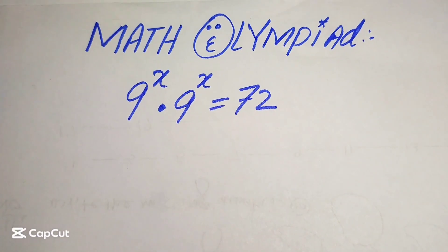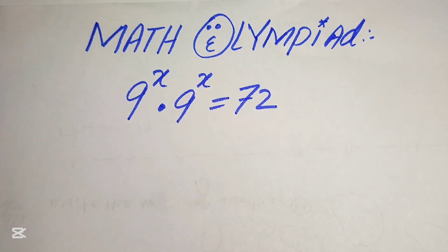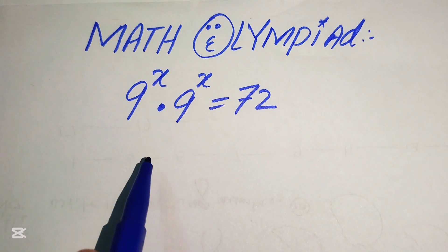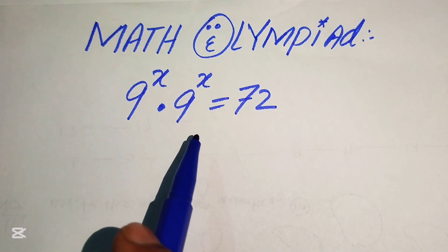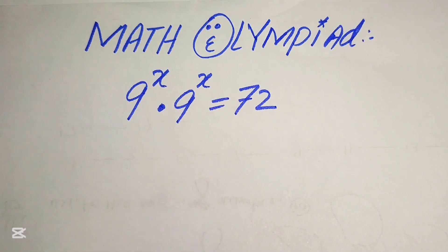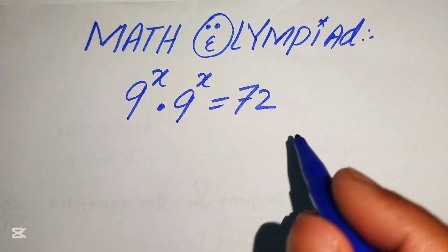Hello everyone, welcome to solving this nice math lumped exponential equation problem. Here we have 9 to the power of x times 9 to the power of x equals 72, and we solve this problem for the values of x.